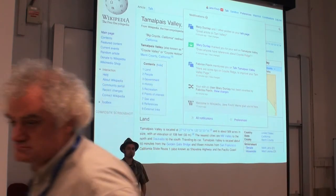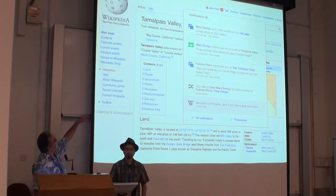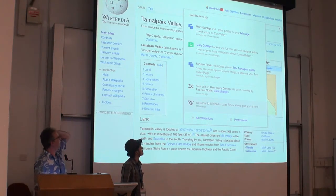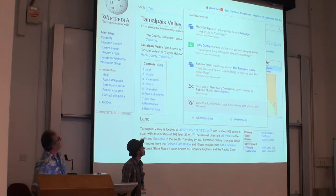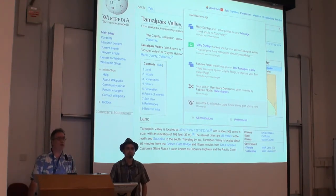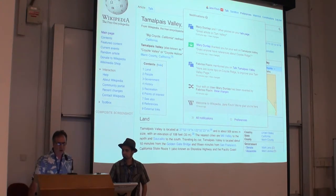When you get a notification on the US Wikipedia, where it's currently installed, as well as MediaWiki.org, a little red badge appears at the top to let you know that you've got a notification. If you click on the red badge, you get to see this little fly-up that shows you a range of different notifications.